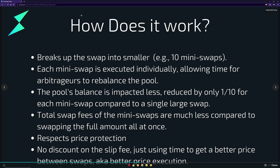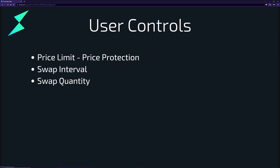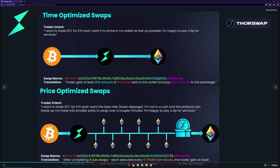Streaming swaps breaks the swap into smaller swaps — say 10 mini swaps — each executed individually, allowing time for arbitrageurs to rebalance the pool, done say every 10 blocks (a 10/10). The pool balance is impacted less: instead of one big push, you're doing one push of one-tenth the size, so you pay much less overall slip. This also respects price protection: if the network can't achieve the specified minimum — say 1.035 ETH — on the first swap the whole thing is refunded. If it can do some but not others, those completed swaps proceed and the failing one is refunded.